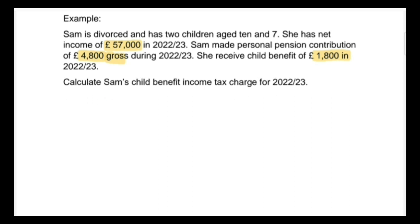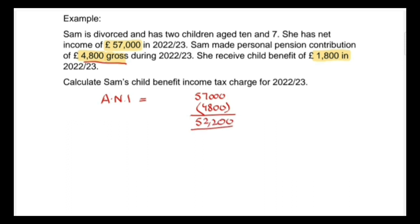To calculate adjusted net income, gross pension contributions are deducted. In this question, we have a personal pension contribution of £4,800 gross. After deducting this from net income of £57,000, you get £52,200 — so £52,200 is the adjusted net income.